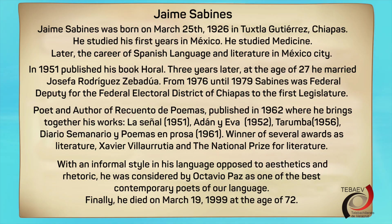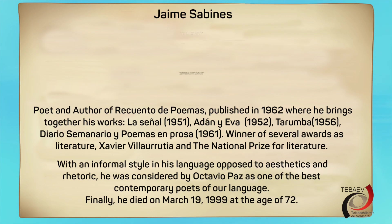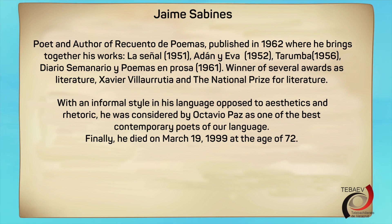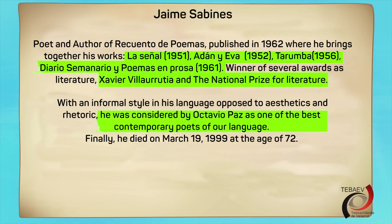Concluyendo con la narración, te invito a que leas los últimos dos párrafos donde conocemos sus obras: La Señal, Adán y Eva, Tarumba, Poemas en prosa. Así como ganador de varios premios como el Premio Javier Villaurrutia y el Premio Nacional de Literatura, entre otros. Él fue considerado por Octavio Paz como uno de los mejores poetas contemporáneos de nuestra lengua.